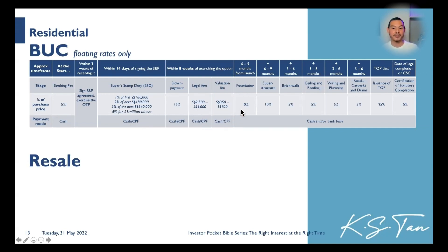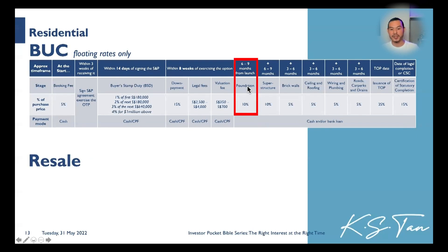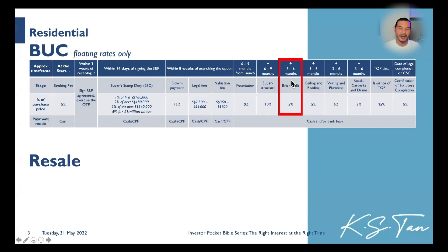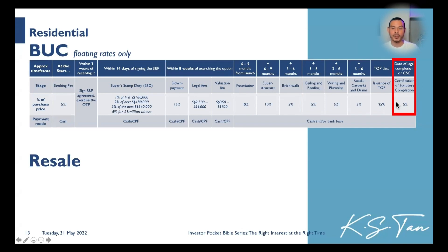This is how the progressive payment schedule starts. The 10% portion is what you pay during the foundation stage. The entire flow I'm covering now works out to be 80%. Foundation typically takes six to nine months, followed by the superstructure at another six to nine months. As a rule of thumb, every 5% is about three to six months, all the way until TOP — where you pay the heavy 25%. The last 15% is only payable one year later after TOP.